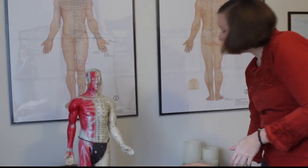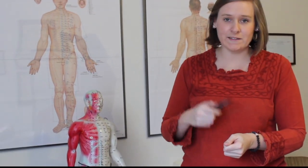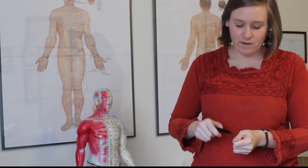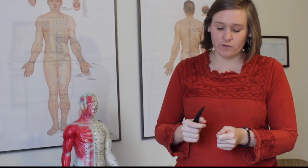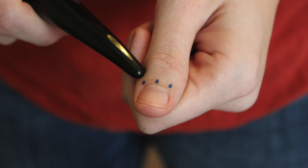The next step is going to be a massage of three points at the base of the fingernail. And what you're going to do, you can either use the tip of your walnut or an acupressure tool and massage these three points 30 times each on the left, 30 times each on the right.